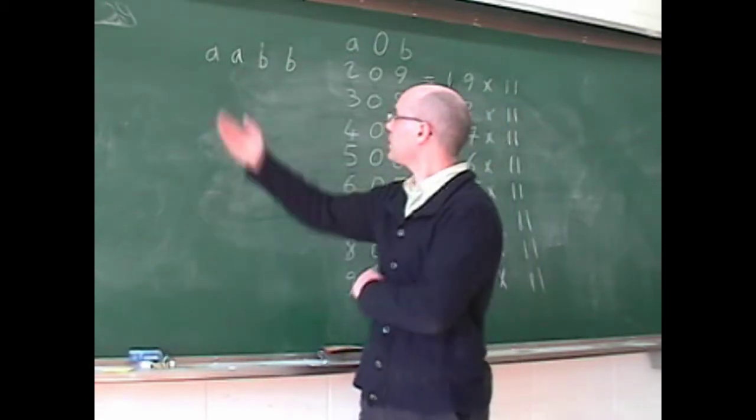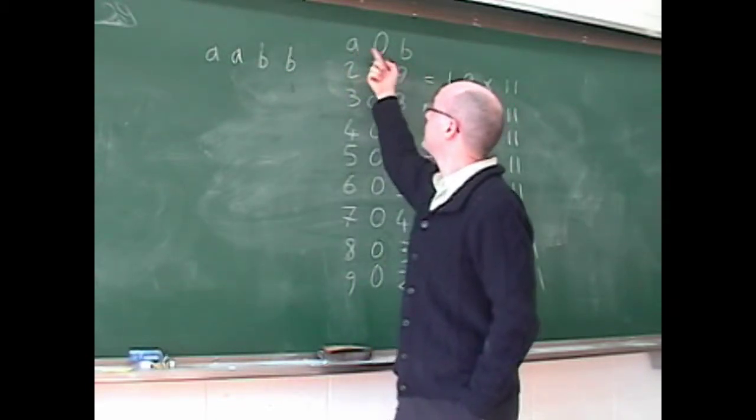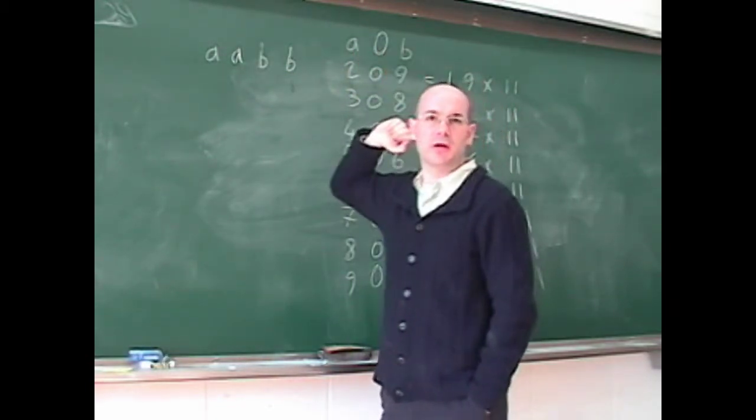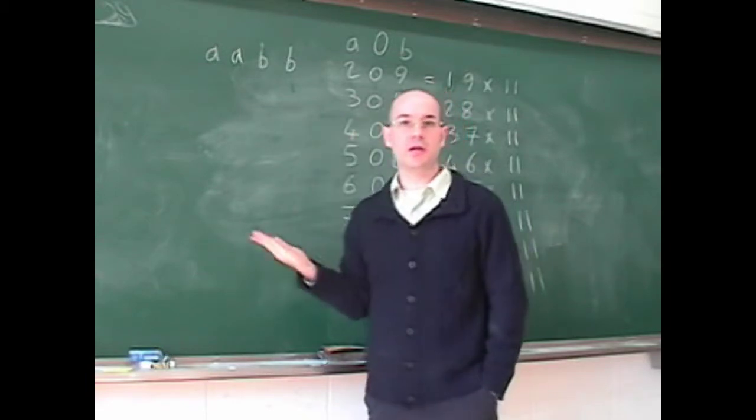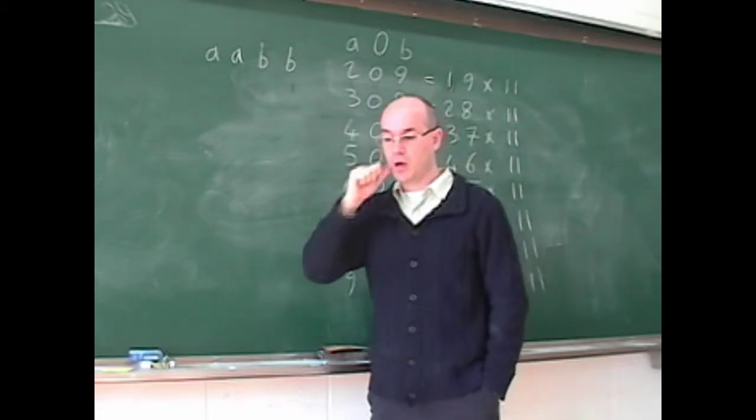So to find this number, we have to find this number which is A0B, which is a multiple of 11. So we need a list of multiples of 11 which have 0 in between.